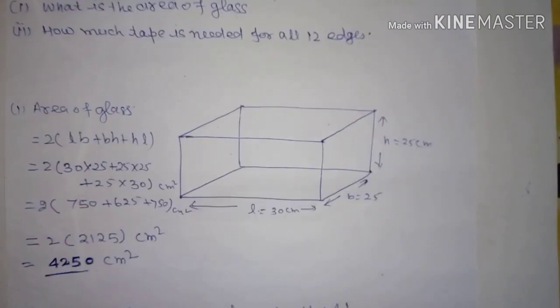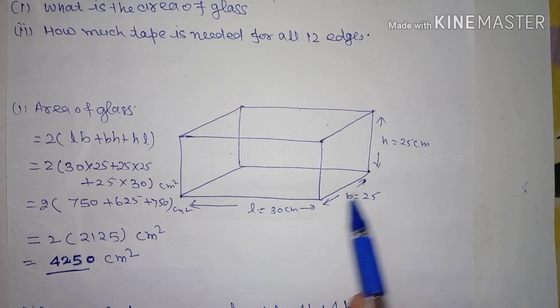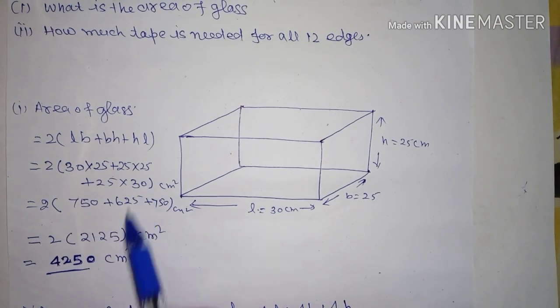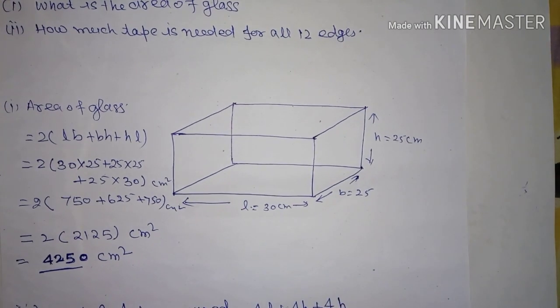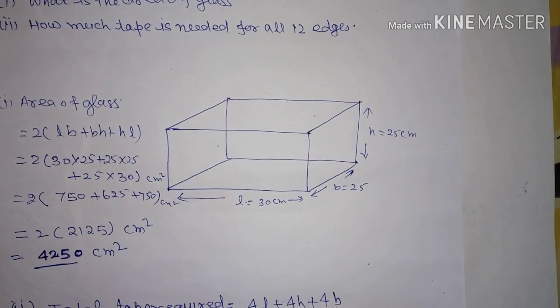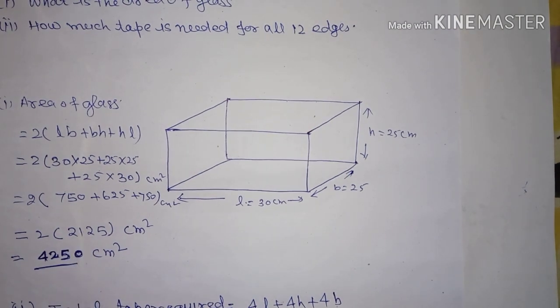First, the area of glass is equal to 2(lb + bh + hl). Put the values and complete the calculation. This comes to 4250 centimeter square. This much glass is needed to make the herbarium.